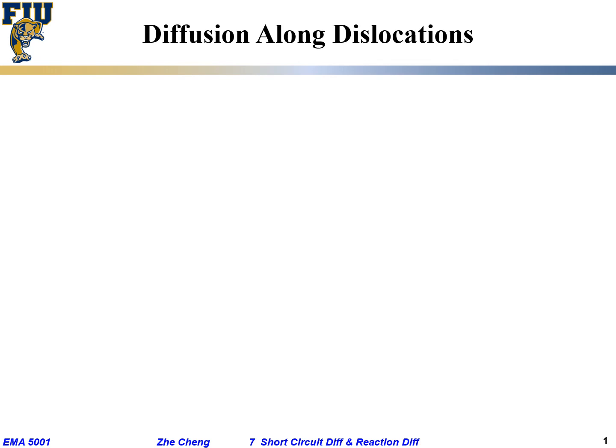So we talked about one type of defect, which is grain boundary. Let's think similarly about another defect called dislocation.